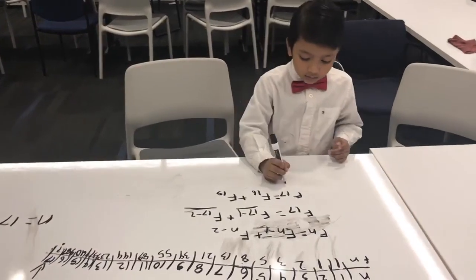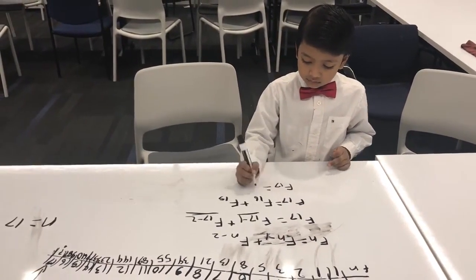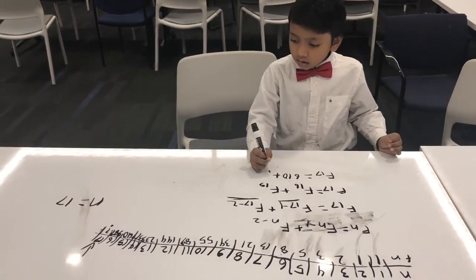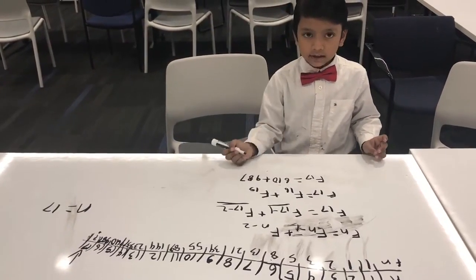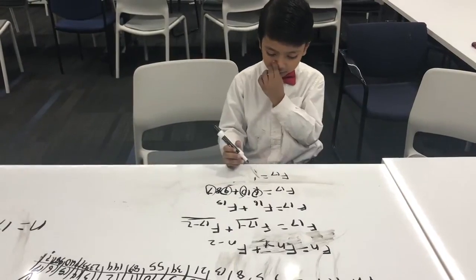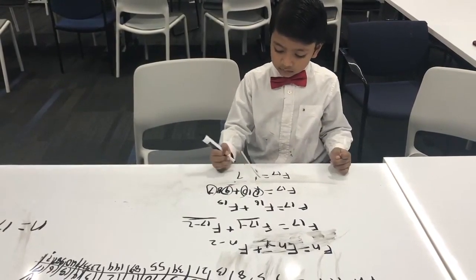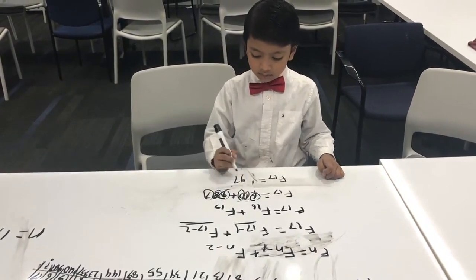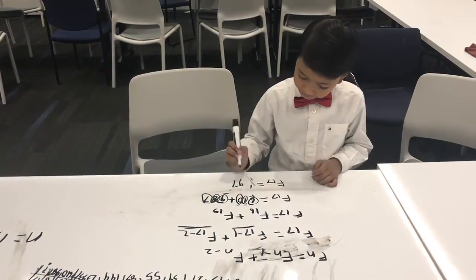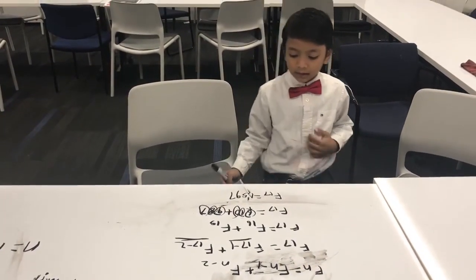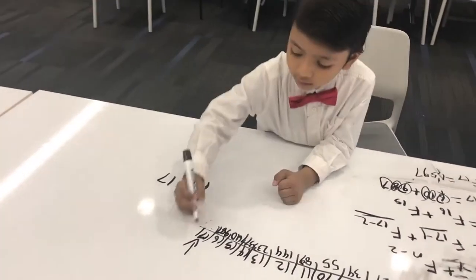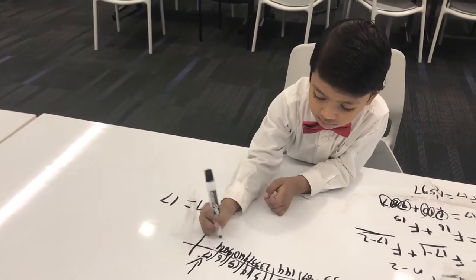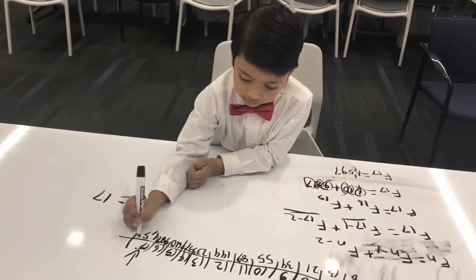So F(17) equals 610 plus 987. I like to arrange it like that: 7 plus 0 equals 7, 8 plus 1 equals 9, 9 plus 6 equals 15. So 1,597 is the 17th Fibonacci number. One thousand five hundred and ninety-seven. Wow!